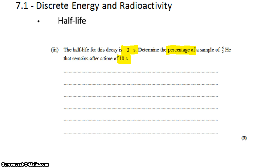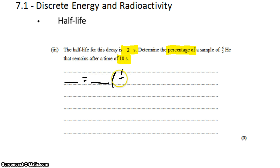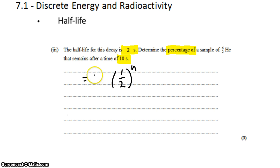We have a couple of different equations that we can use to describe decay. Probably the simplest is that some thing at the moment is equal to some original amount of the thing times 1/2 to the power of the number of half-lives elapsed. So this might be the original number of atoms, and this is the current number of atoms after n half-lives. This is the original mass, and this is the current mass after n half-lives. What we're going to say is that this is the original percentage, and this is the current percentage remaining.